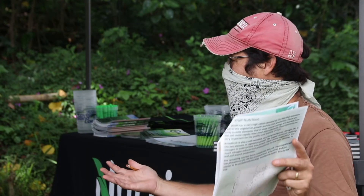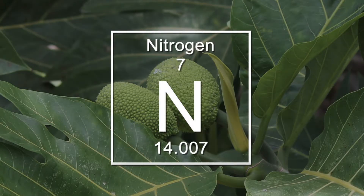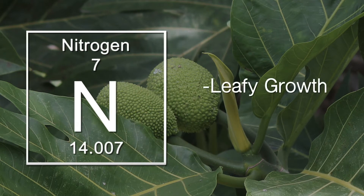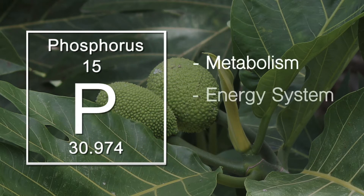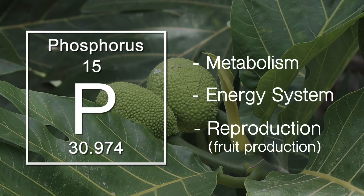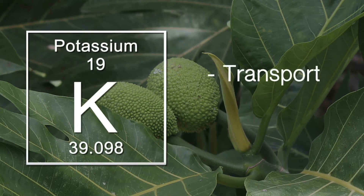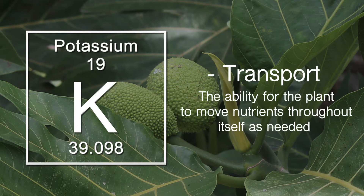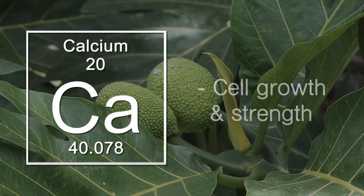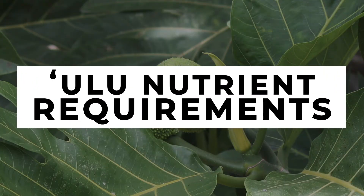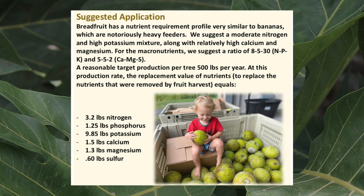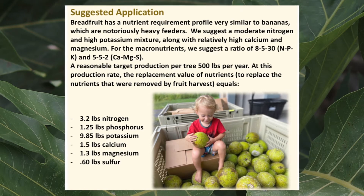The nutrients play a lot of different roles in the plant. As dominant roles: nitrogen is generally used for growth, especially leafy growth — nitrogen is critical in chlorophyll, so anything green on your plant has nitrogen in it. Phosphorus is really for metabolism and reproduction — the energy system of the plant and especially setting and creating fruit. Potassium is really about transport and the ability of a plant to move nutrients and water around itself, and the ability to open and close its stomata and transfer oxygen and carbon dioxide. Calcium is really about cell growth and strength — when you see lesions or fruit that bruises really easily, those plants have weak cells. If anyone grows bananas, the nutrient profile is very similar: relatively low nitrogen and then really high potassium, plus pretty high calcium and magnesium demand.